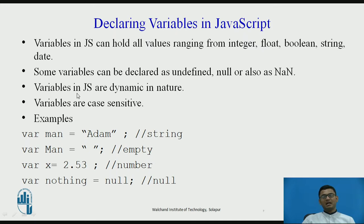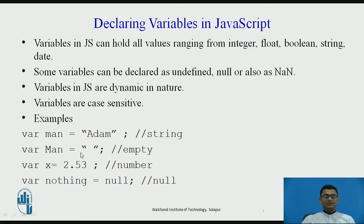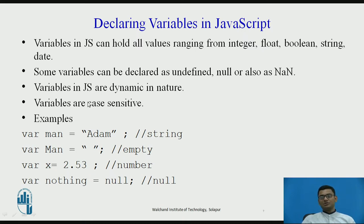The variables in JavaScript are dynamic in nature. If I declare VAR man equals 'Adam', and just the next line I assign man equals 100, then if you check the type of man after the assignment of the value 100, it will show you number, because the last value assigned to the variable man was 100. So variables in JavaScript are dynamic in nature and you can assign dynamic values to any variable.